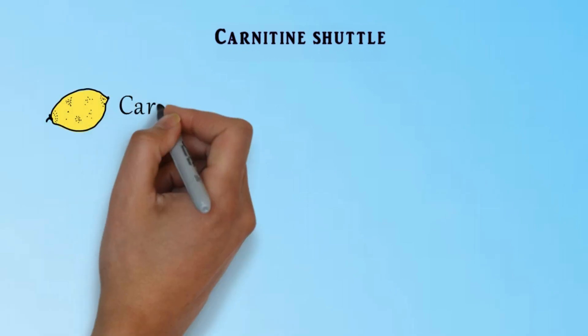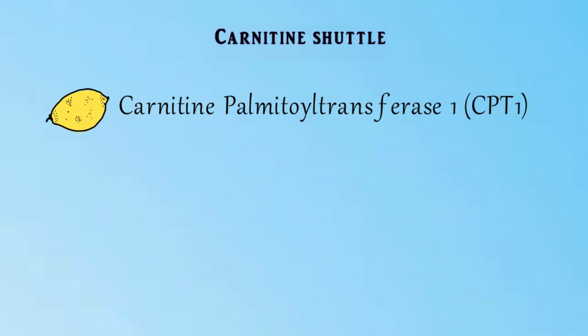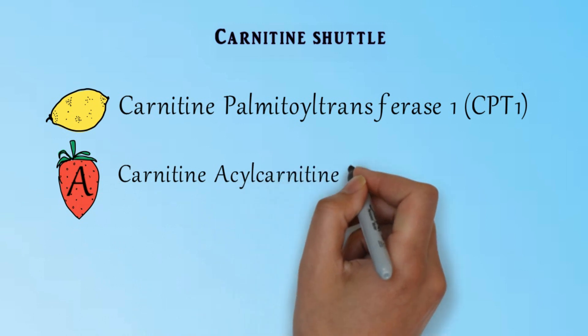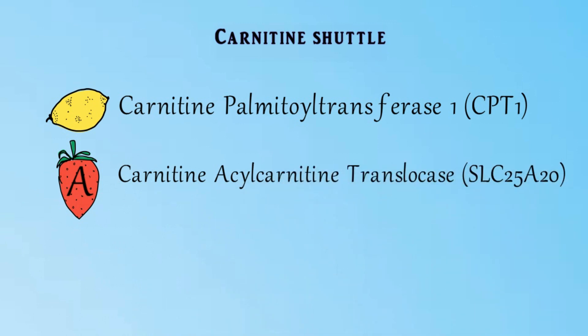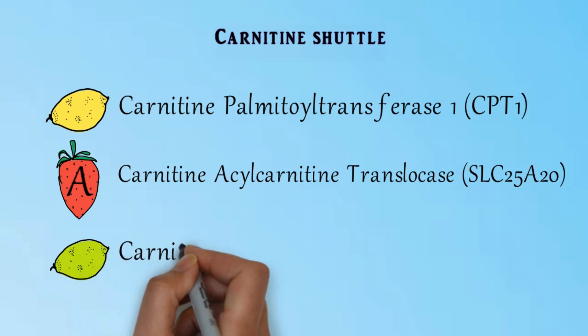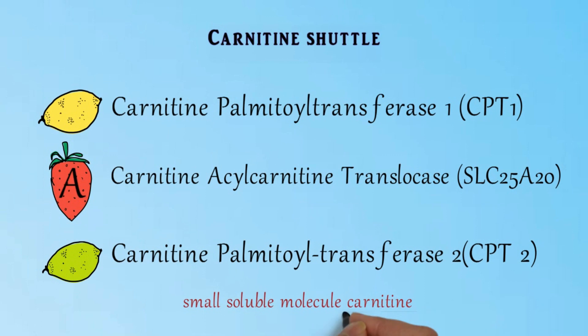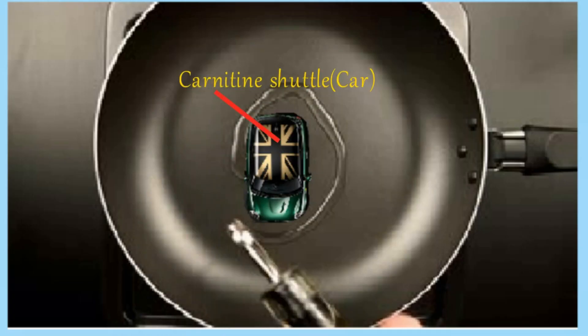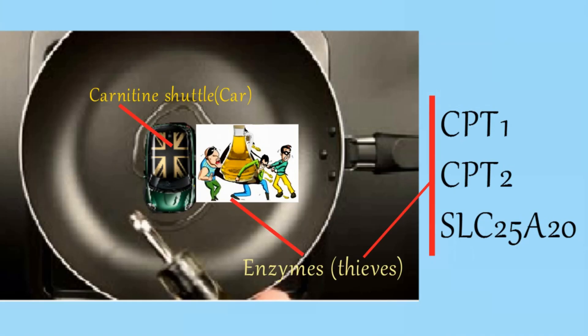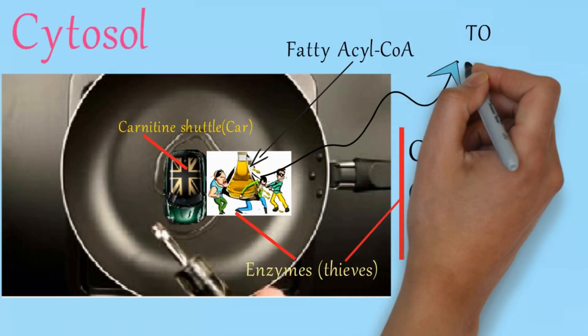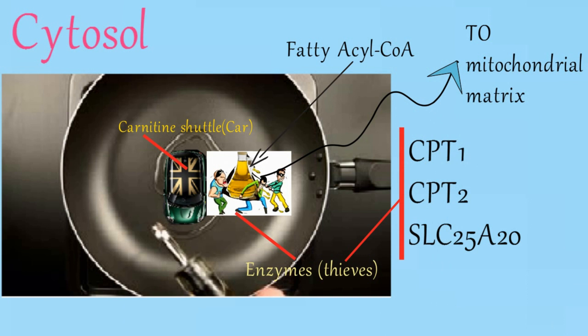The carnitine shuttle consists of three enzymes: carnitine palmitoyltransferase 1 (CPT1), carnitine acyl-carnitine translocase (SLC25A20), and carnitine palmitoyltransferase 2 (CPT2), plus the small soluble molecule carnitine. Imagine the carnitine shuttle as a car with three thieves — the enzymes — trying to shift fatty acyl CoA from the cytosol to the mitochondrial matrix for beta oxidation.